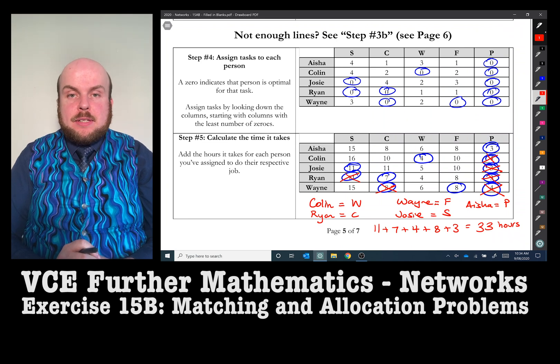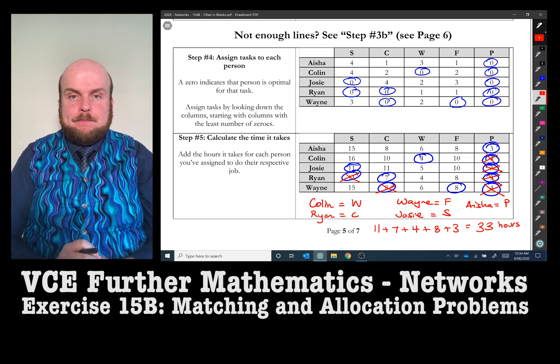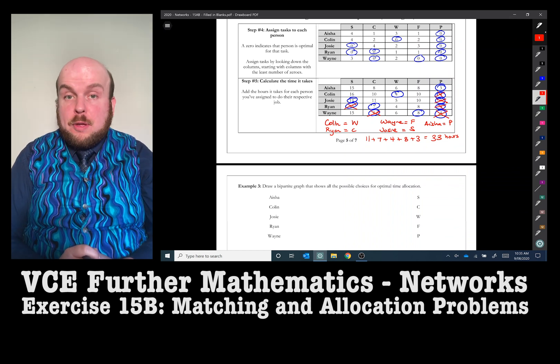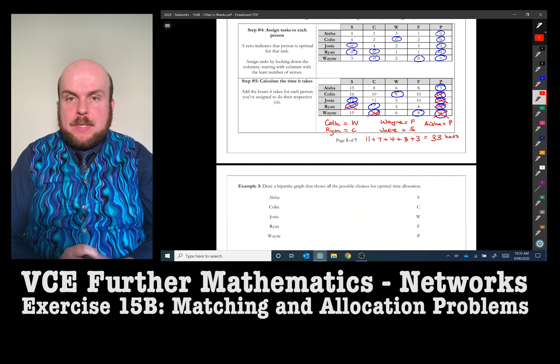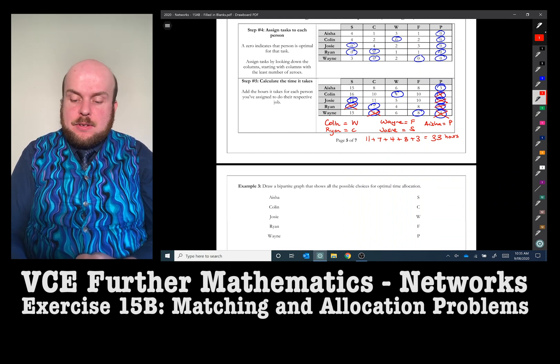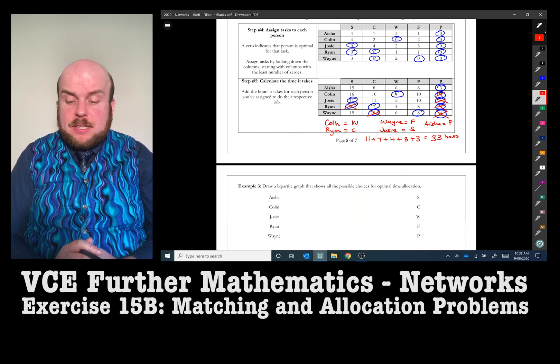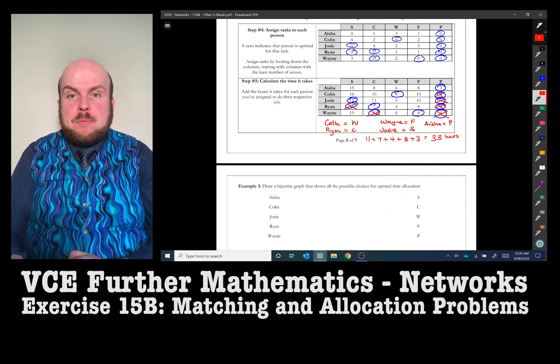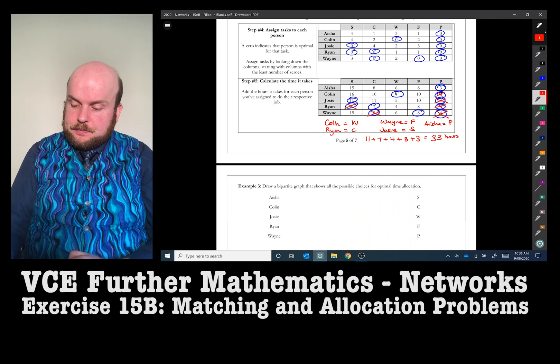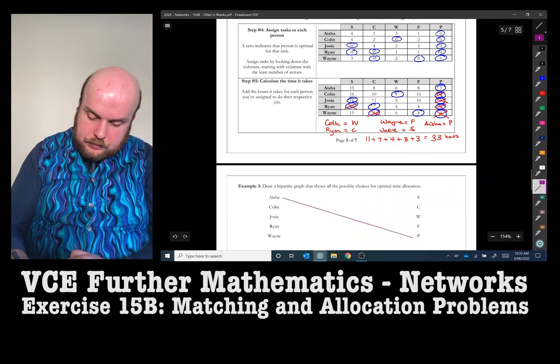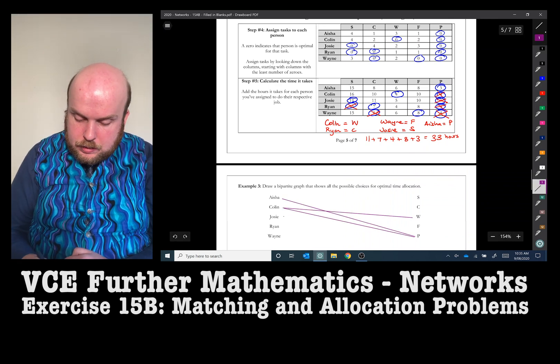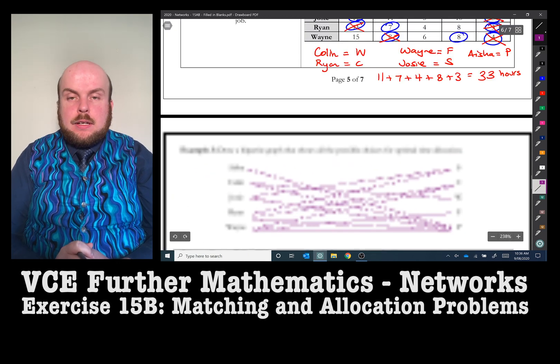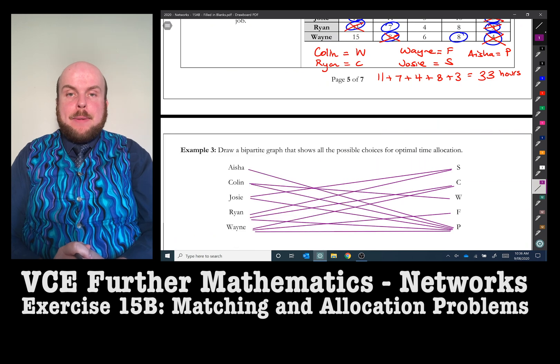So we have reached the same answer as we've done before. Example three, draw a bipartite graph that shows all the possible choices for optimal time allocation. This is when we need to use that table that has all the zeros in it to be able to draw the bipartite graph. For that is the optimal time allocation.